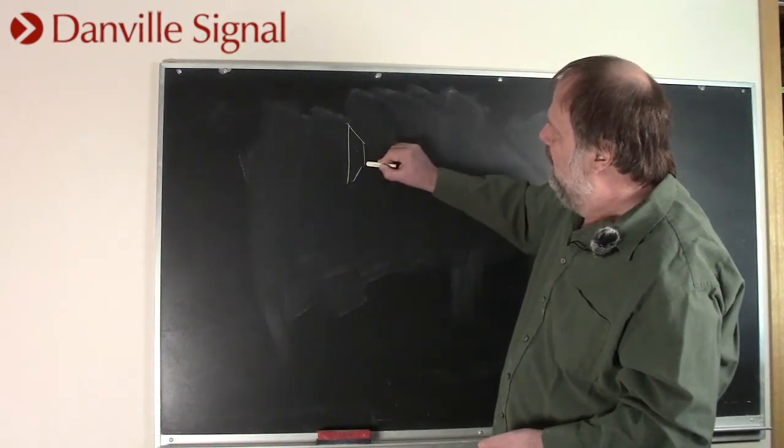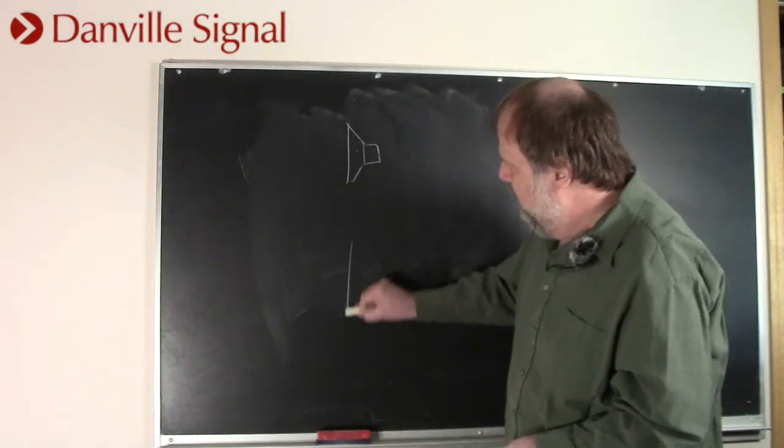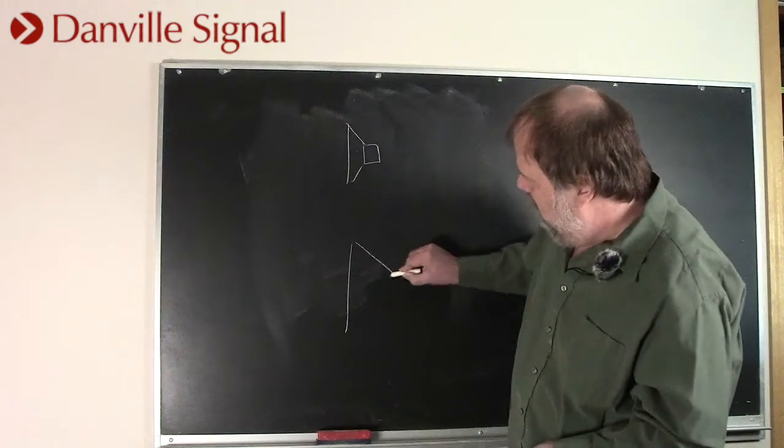So here's a very simple crossover. That's a tweeter. I realize it's not a very special one. And this represents, let's say, a woofer.